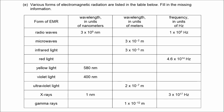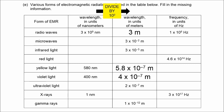In this table, if we have to go from units of nanometers to meters, we're going to divide by 10 to the 9th. So 3 times 10 to the 9th nanometers is equivalent to 3 meters. 580 nanometers is equivalent to 5.8 times 10 to the minus 7 meters. Violet light has a wavelength of 400 nanometers, or 4 times 10 to the negative 7 meters. And x-rays, 1 nanometer, becomes 1 times 10 to the negative 9 meters.